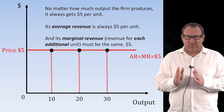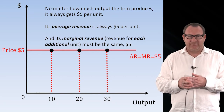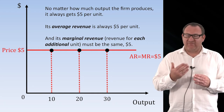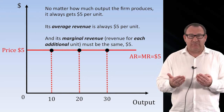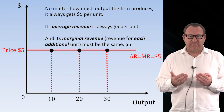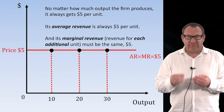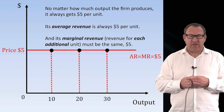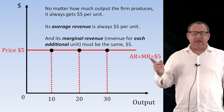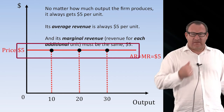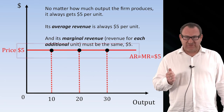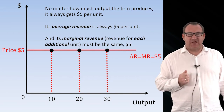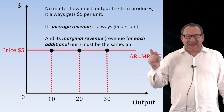So in a perfectly competitive world, from the perspective of an individual firm, it accepts the market price determined by equilibrium — say $5. The firm's average revenue will be $5 per kilo, and the firm's marginal revenue — the revenue from each additional unit it sells — will also be $5. Graphically, this means we would have a horizontal average revenue and marginal revenue curve at $5.